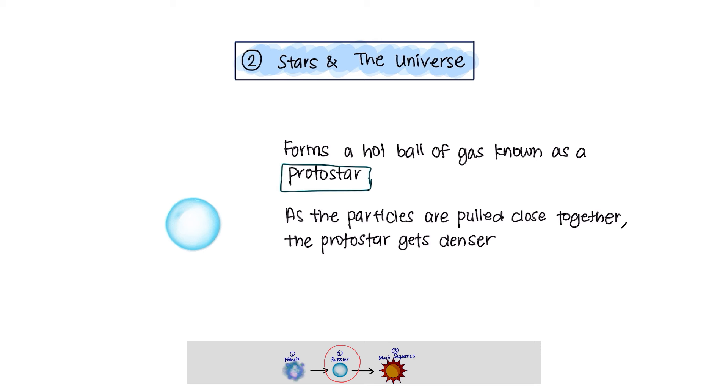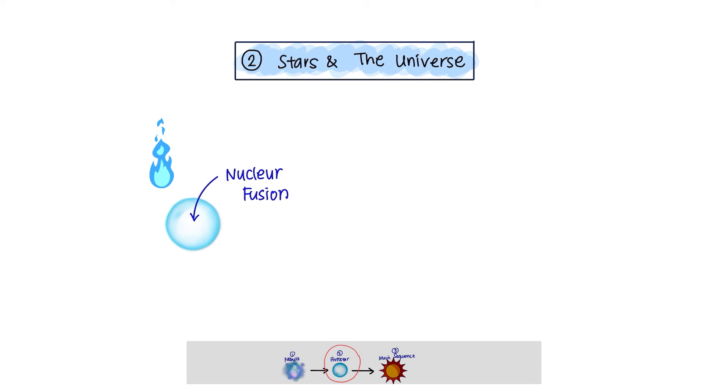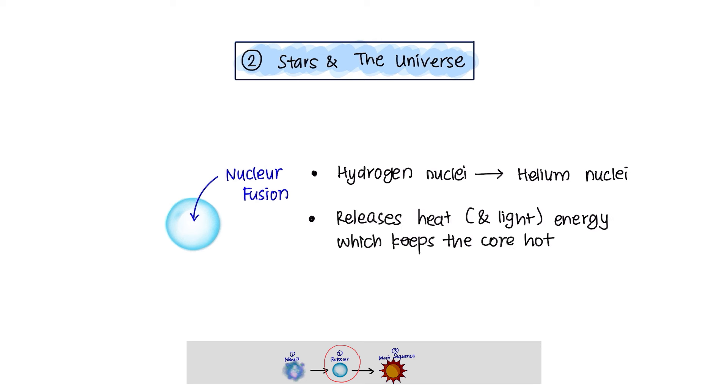As the particles are pulled closer together, the protostar gets denser, resulting in more frequent collisions between the particles, which then causes the temperature to increase. Once the protostar becomes hot enough, nuclear fusion takes place within its core. The hydrogen nuclei will fuse to form helium nuclei. Every fusion reaction releases heat and light energy, which keeps the core hot.